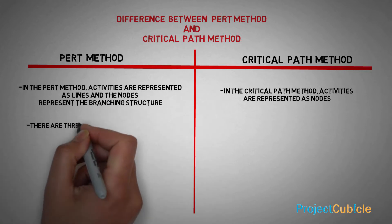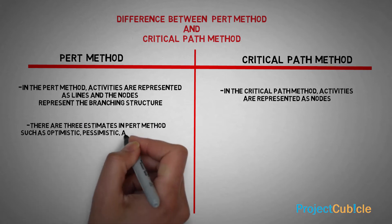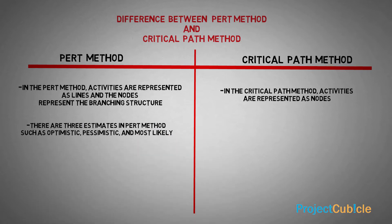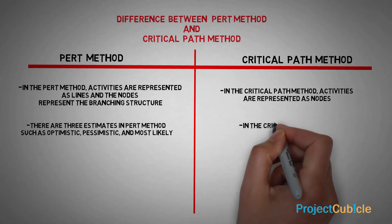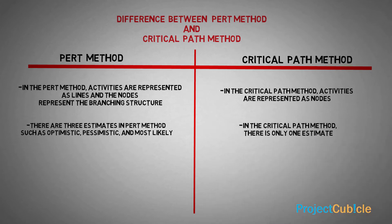Second: there are three estimates in the PERT method — optimistic, pessimistic, and most likely. In the critical path method, there is only one estimate.